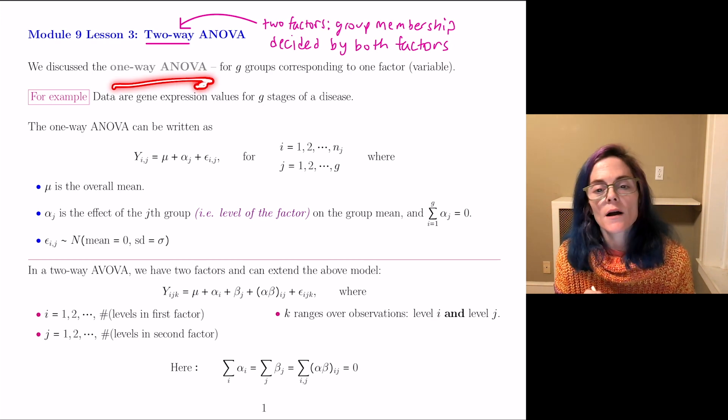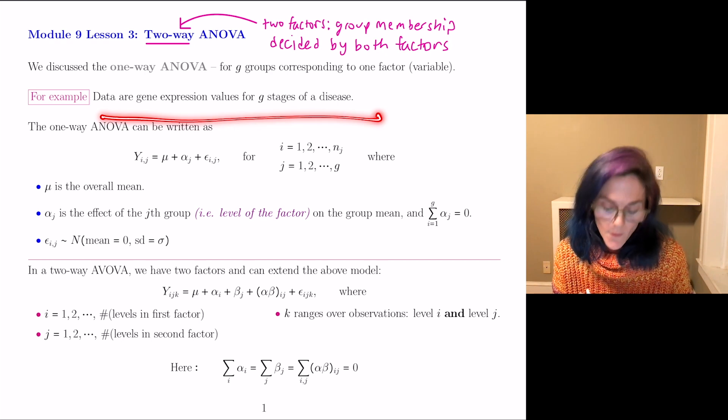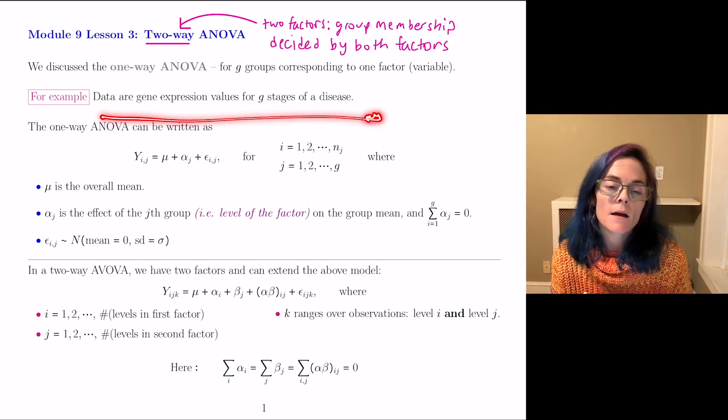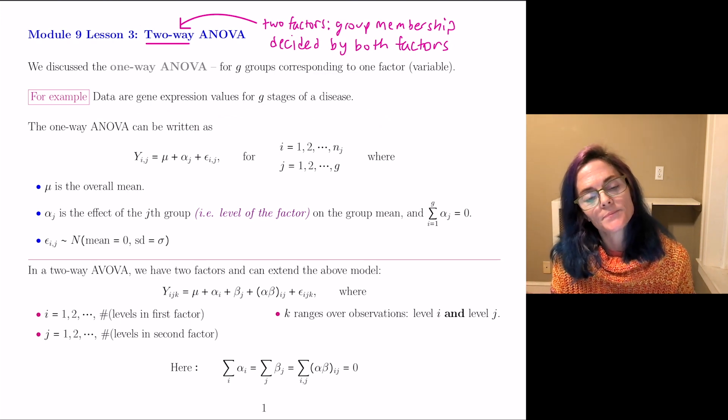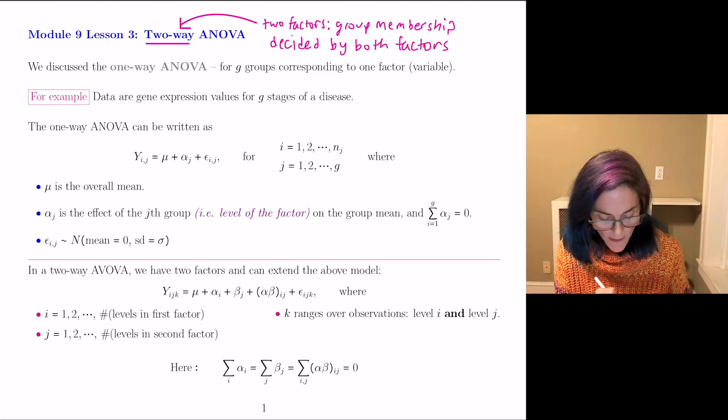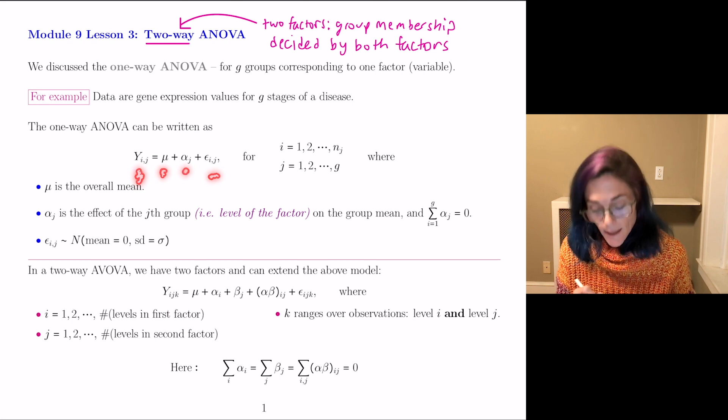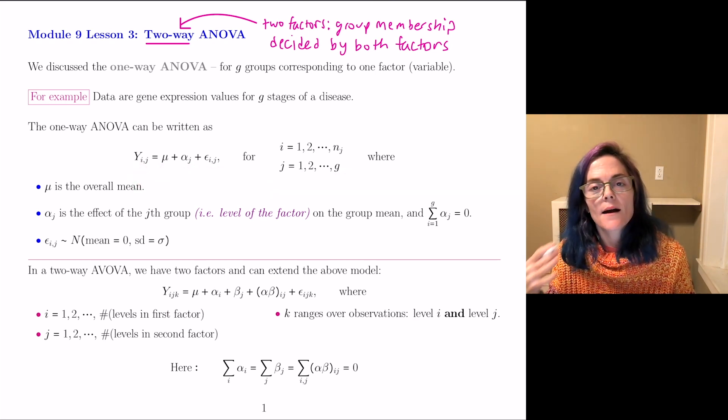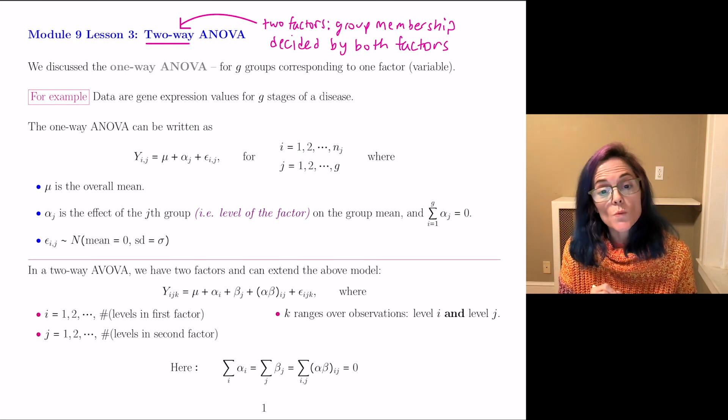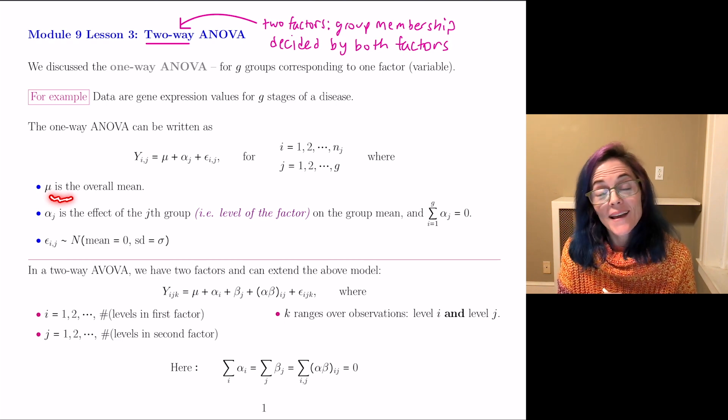In the one-way ANOVA, we had G-groups corresponding to one factor variable. And one example that we saw built into our Canvas course is that the data are gene expression values for G-stages of a disease. One-way ANOVA can be written this way. We have Y_ij = μ + α_j + ε_ij. Here we have G-groups. Group j has n_j observations. Now writing it this way,